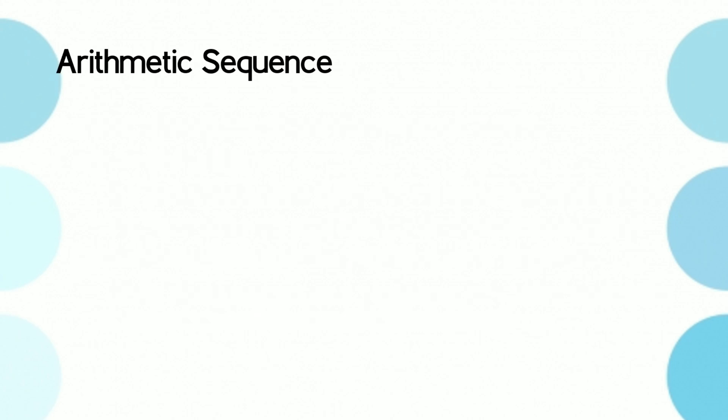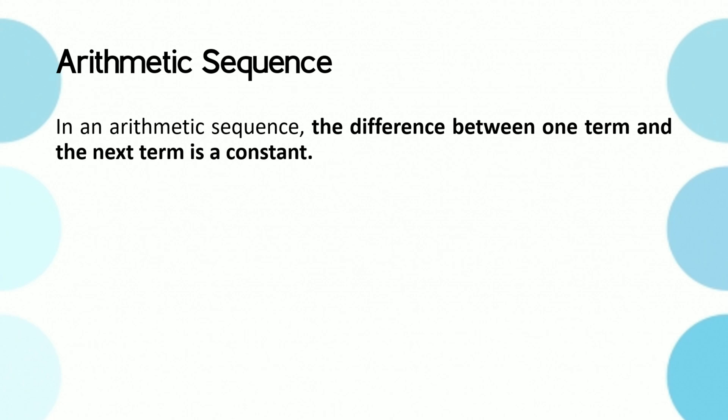Now let's look at some sequences and their rules. In an arithmetic sequence, the difference between one term and the next term is a constant. In other words, we just add some value each time on to infinity.